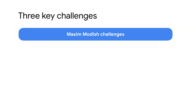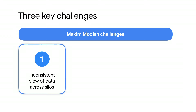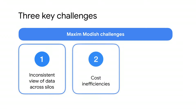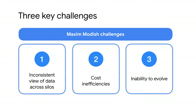To better meet these expectations, Maxim Modish needed a complete picture of their inventory flow and real-time decision-making at scale. This revealed three key challenges they faced with their technology stack: one, inconsistent view of data across silos; two, cost inefficiencies due to management overhead and seasonal scaling needs; three, an inability to evolve with new business needs.